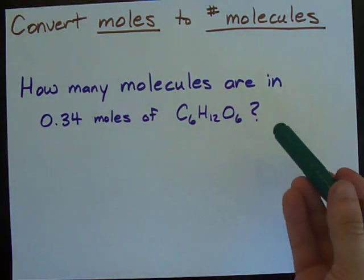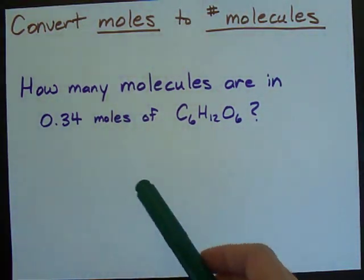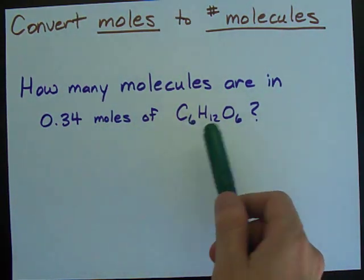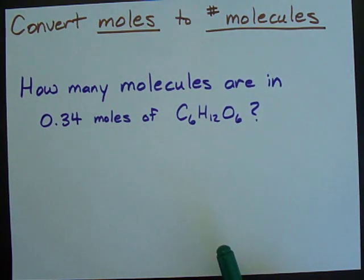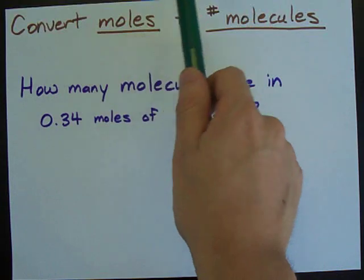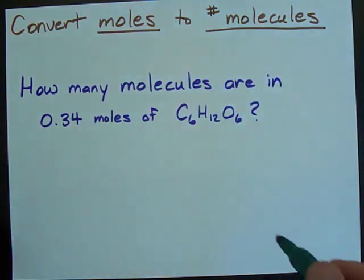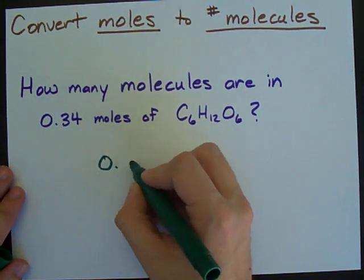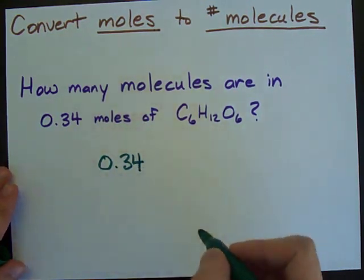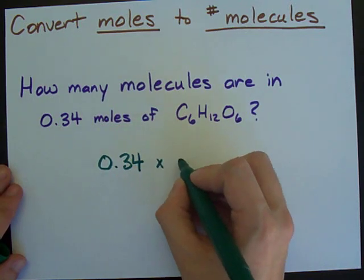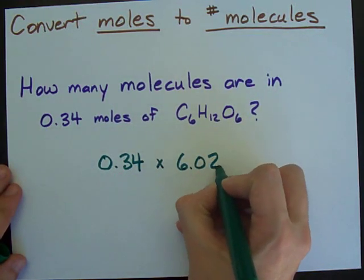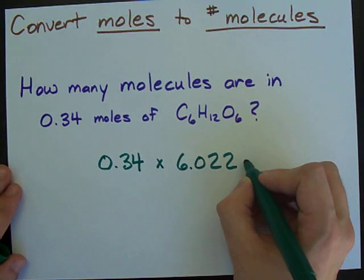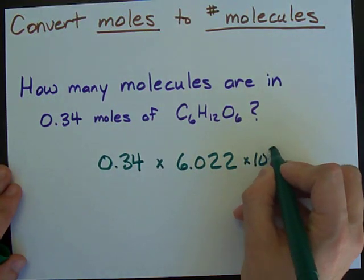How many molecules are in 0.34 moles of C6H12O6? How many molecules are in 0.34 moles of anything? To convert a number of moles into a number of molecules, all you have to do is take the number of moles that you have, 0.34, and multiply it by 6.022 times 10 to the power of 23.